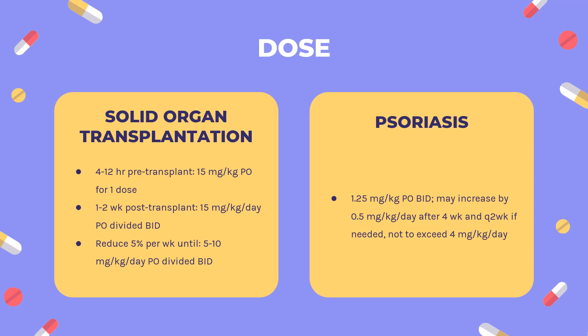Dosing — Rheumatoid Arthritis: Indicated for severe active rheumatoid arthritis where the disease has not adequately responded to methotrexate; may be used in combination with methotrexate. Gengraf or Neoral: 1.25 mg/kg PO BID; may increase by 0.5–0.75 mg/kg/day after 8 weeks, and again after 12 weeks if needed; not to exceed 4 mg/kg/day. Discontinue if no improvement is observed by 16 weeks. Decrease dose by 25–50% at any time to control adverse effects, such as hypertension or elevations in serum creatinine greater than 30%.